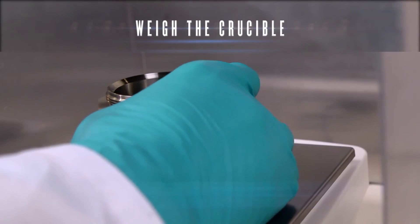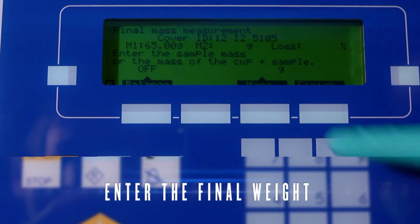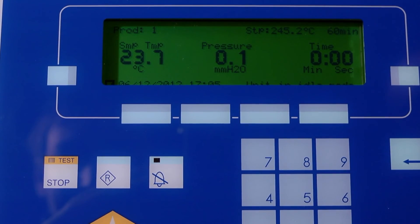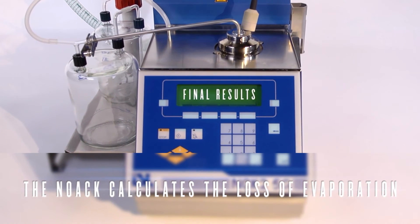Weigh the crucible without the cover, then input the displayed value as the final weight of the sample in the analyzer. The analyzer automatically calculates the loss of evaporation.